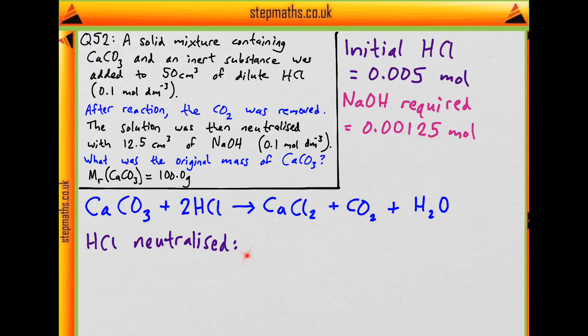If you think of the equation between hydrochloric acid and sodium hydroxide, what's the reacting ratio? If you can't remember, just draw this equation. It's one to one between hydrochloric acid and sodium hydroxide, so it's going to be the same number of moles of hydrochloric acid that was neutralised.